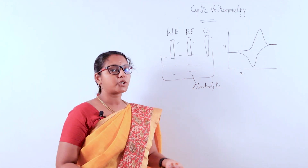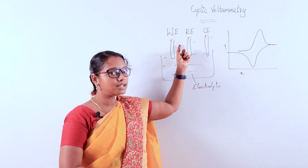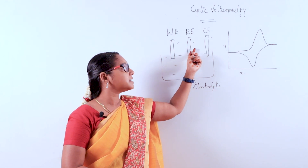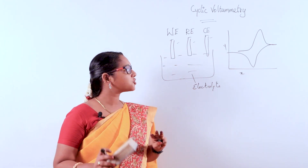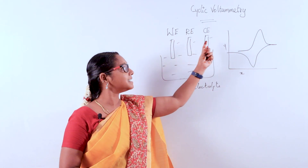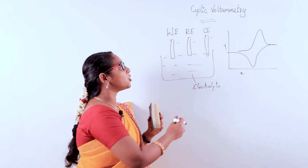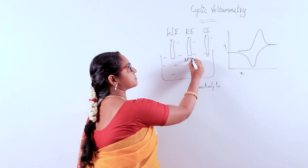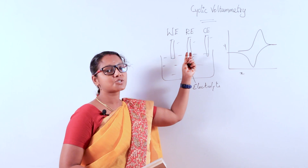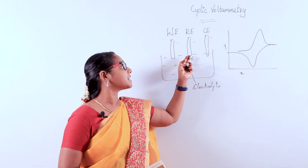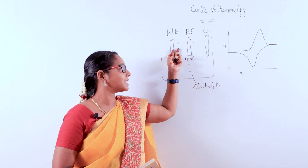When we apply the potential, it occurs between the working electrode and the reference electrode. The current flows through the working electrode and the counter electrode. The reference electrode is a non-polarizable electrode, meaning it resists current, so current flows only through the counter electrode and the working electrode.